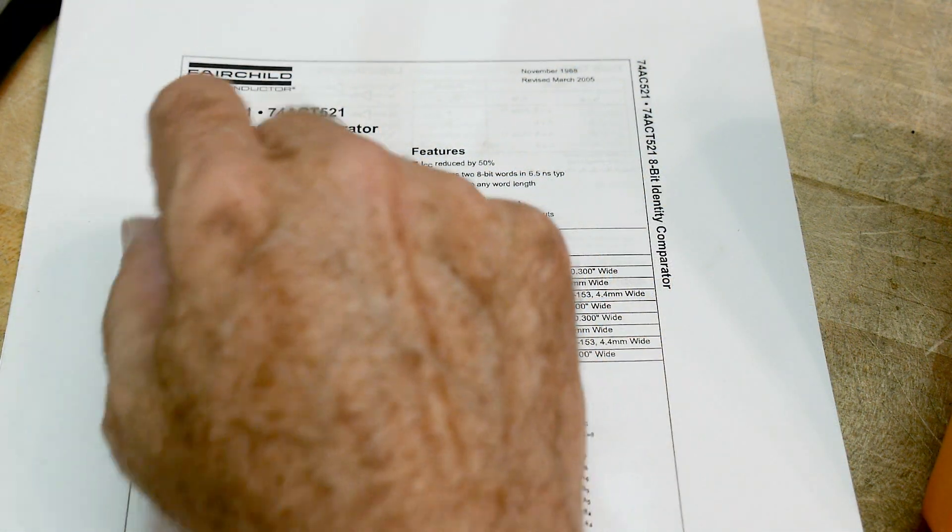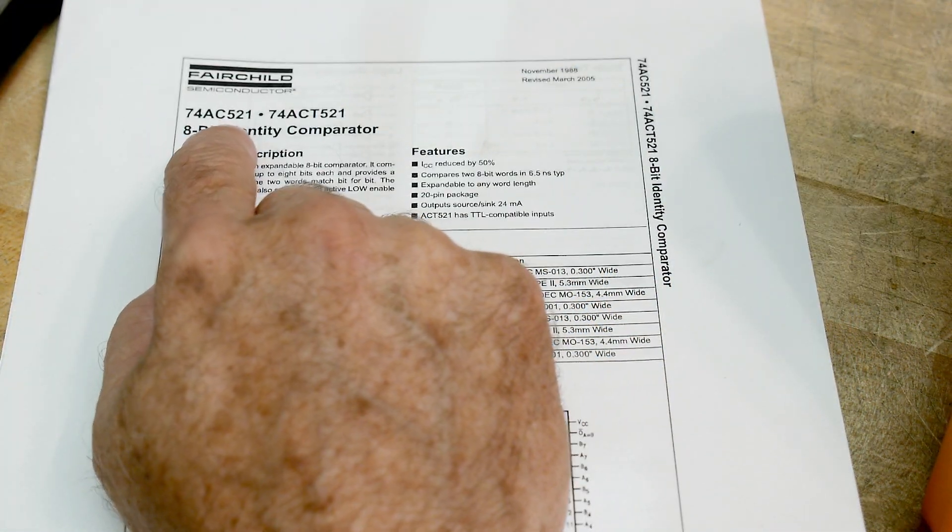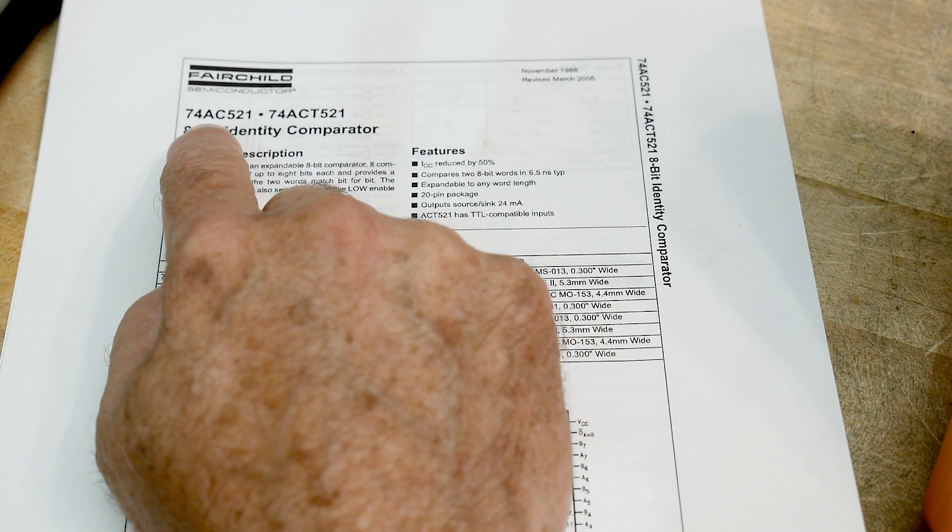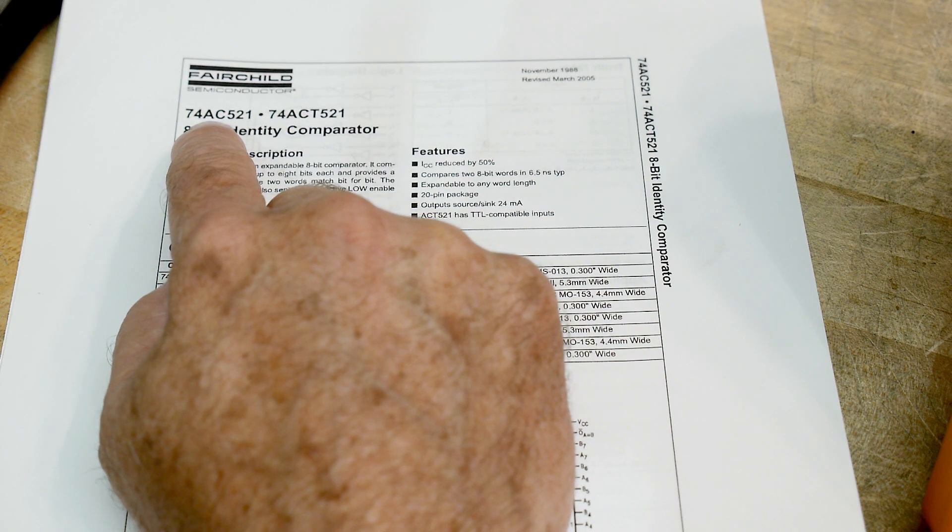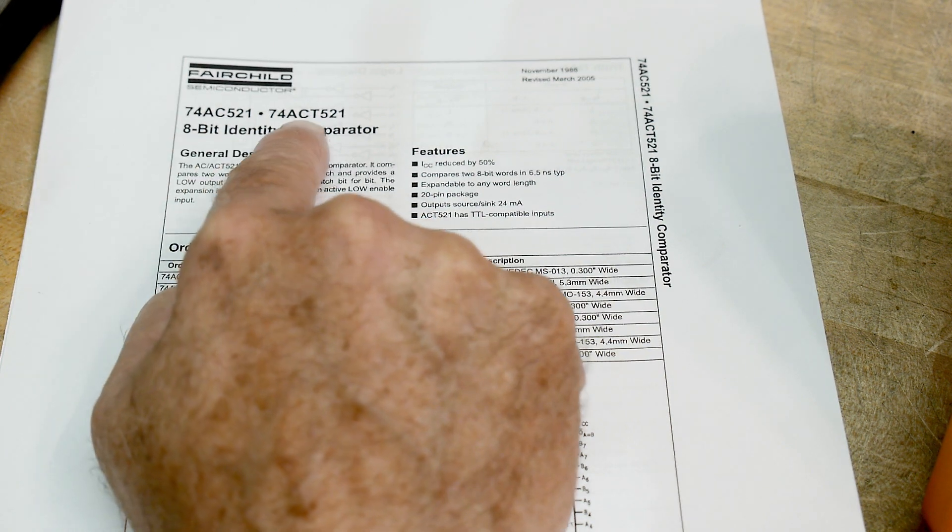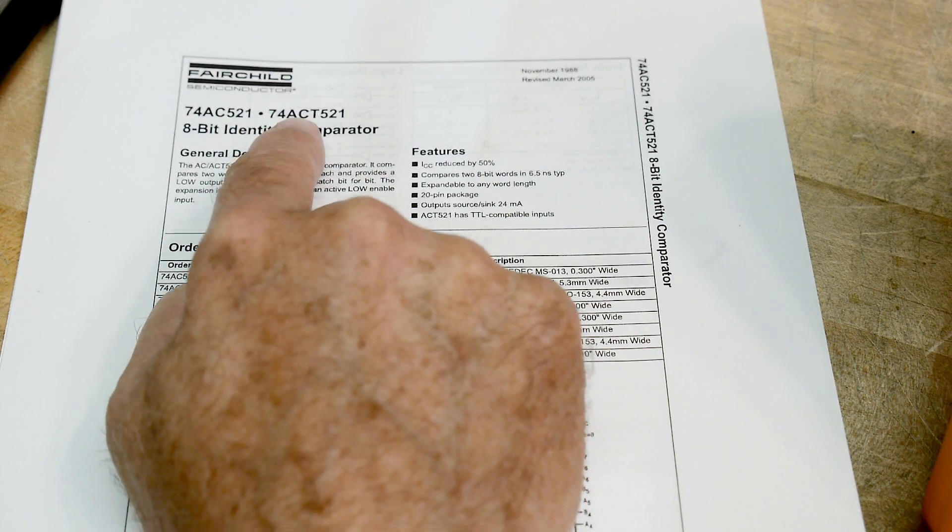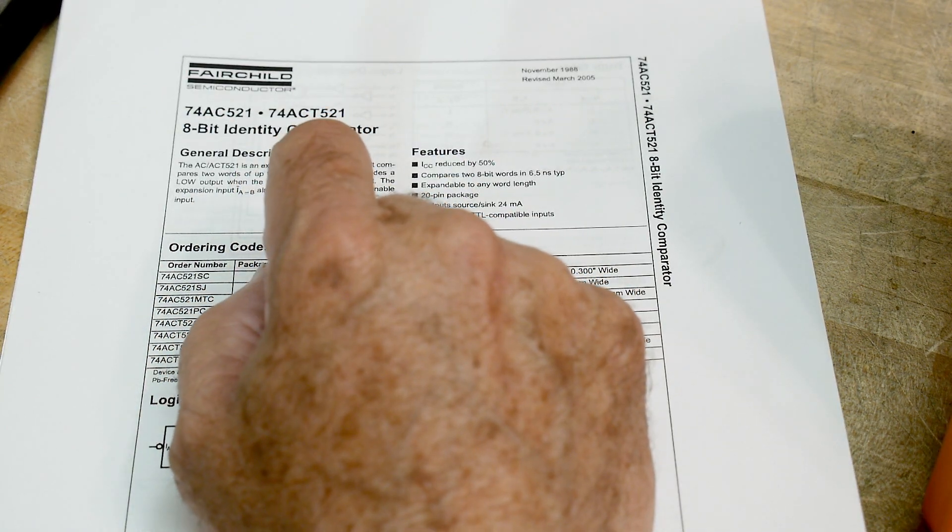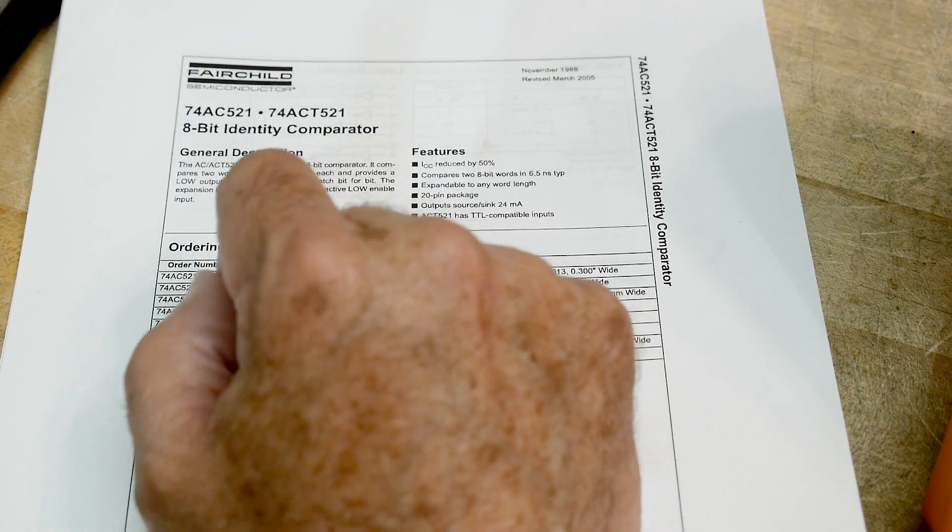Okay, there you go. Chip of the day, it's a 74AC521. There's lots of different families, right? There's the C family, the AC family, the F family, the HC family, the HCT family, there's ACT family, the ACT.